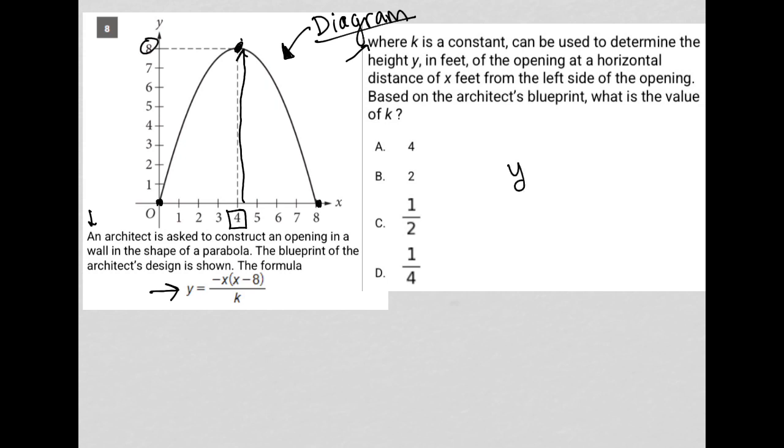So, if I take this equation, y equals negative x times (x minus 8) over k, and I say, well, I know that when x is 4, so it becomes negative 4 times (4 minus 8) over k, y should equal 8. So, I'm replacing these values. I know that y is 8 when x is 4. And by solving this, I should figure out what this constant k value is.